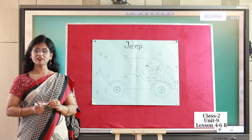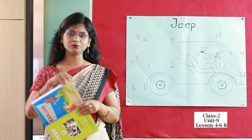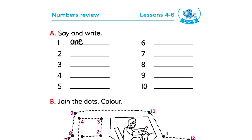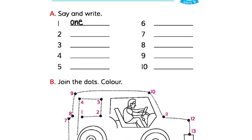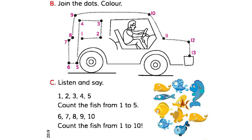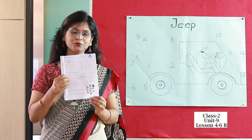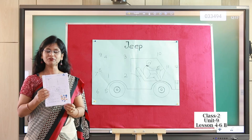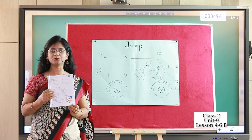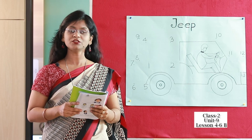Now students, you have to open your book. Everyone, open your book to page number 19. Can you see the same thing in your book? Yes. Now you have to draw with your pencil in your book and you have to join the dots from 1 to 13.